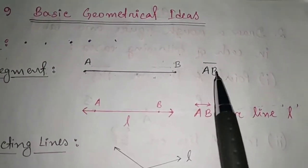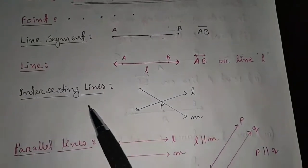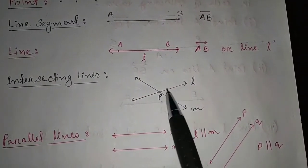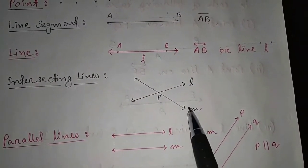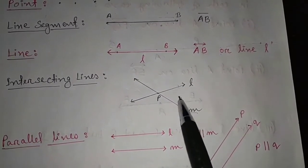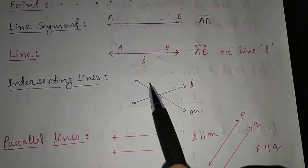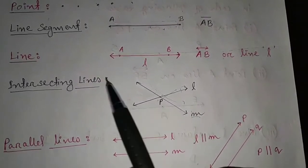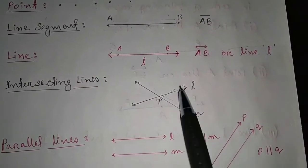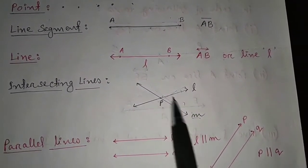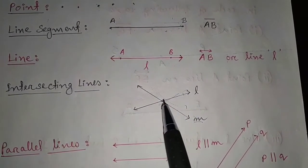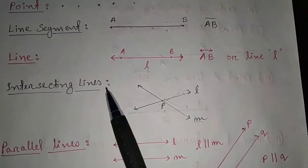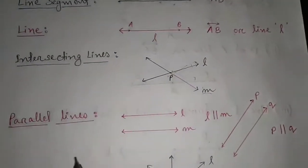Next is intersecting lines. You can see there are two lines here — one line is L and one line is M. When these two lines intersect each other at a point, this type of lines are known as intersecting lines. When two lines cross each other at a point, they are intersecting lines.